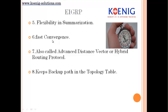EIGRP also has fast convergence. The hello timer of EIGRP is five seconds, so every five seconds EIGRP routers send hello messages to each other to make sure neighbors are alive and to send routing table updates. It is very fast to converge when a primary link goes down. If you have a primary and a secondary link and the primary goes down, EIGRP is very fast to move to the secondary path and reach the destination.